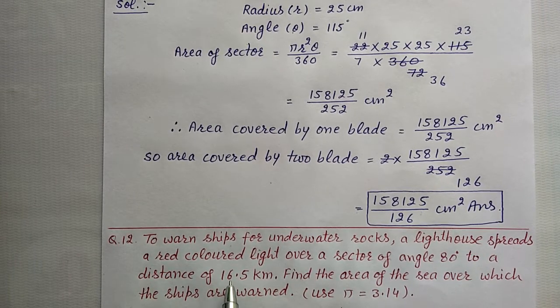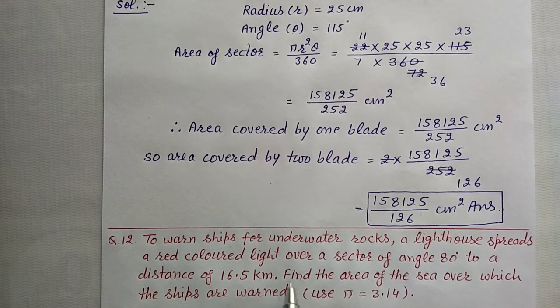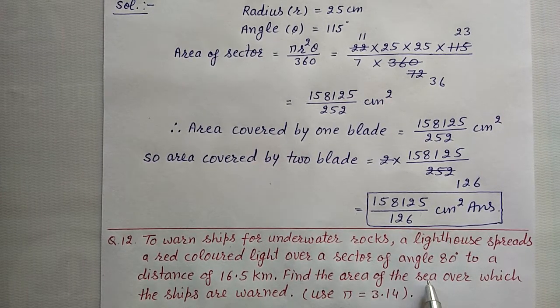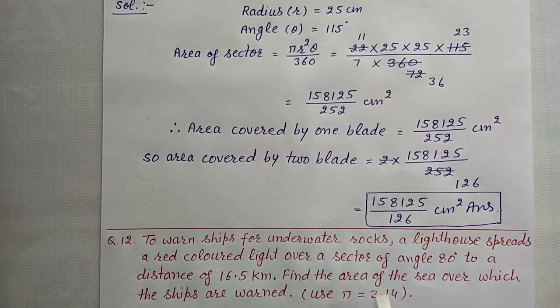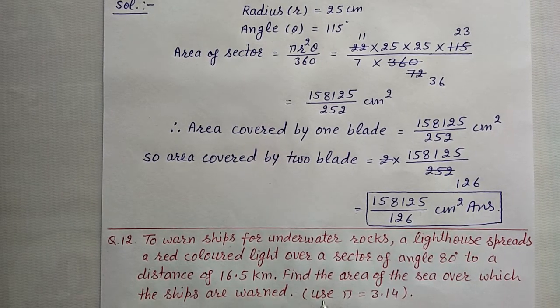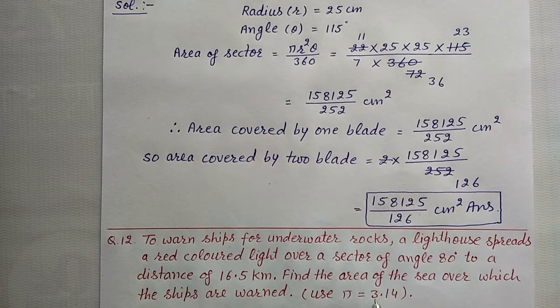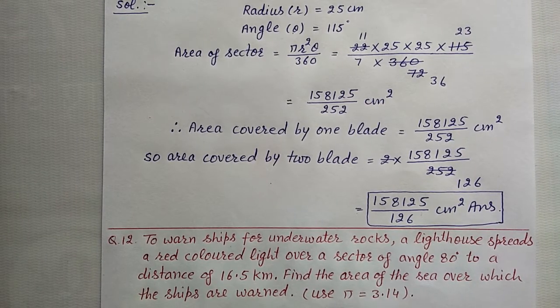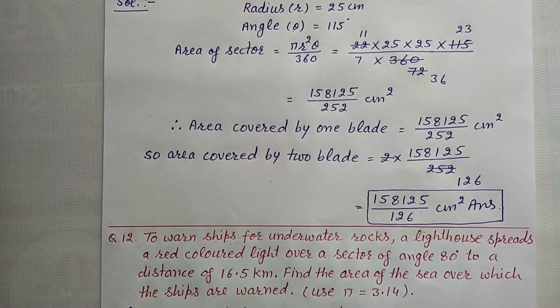To warn ships for underwater rocks, a lighthouse spreads a red coloured light over a sector of angle 80 degrees to a distance of 16.5 km. Find the area of the sea over which the ships are warned. Use pi value 3.14.